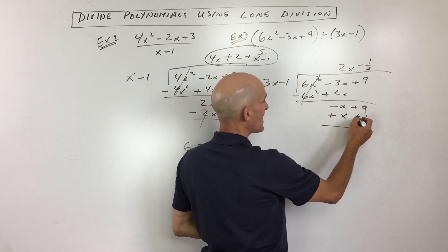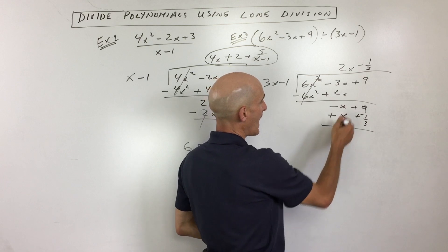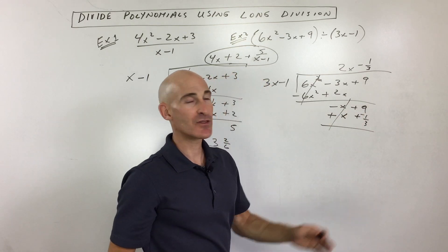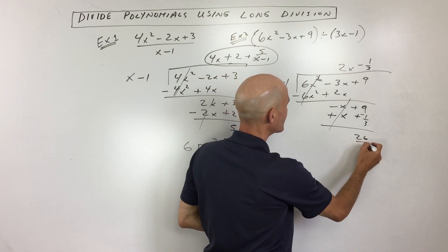Now what we're going to do is we're going to change the signs to the opposite and add. So those are going to cancel out. And 9 is really like 27 thirds minus 1 third is 26 thirds.